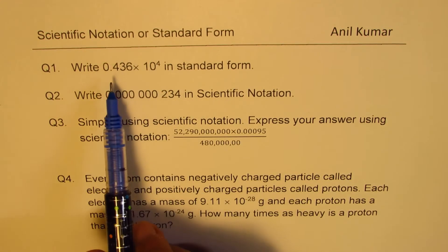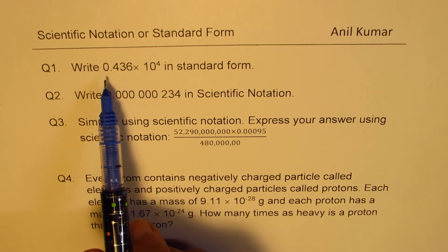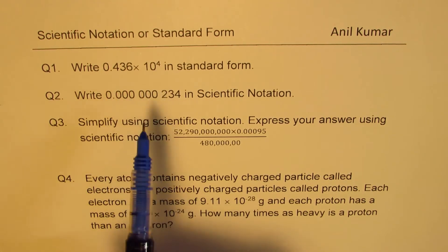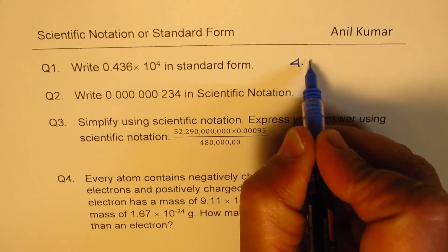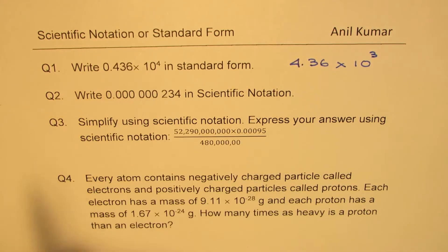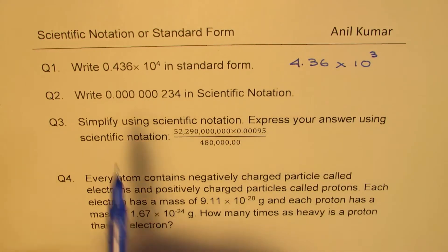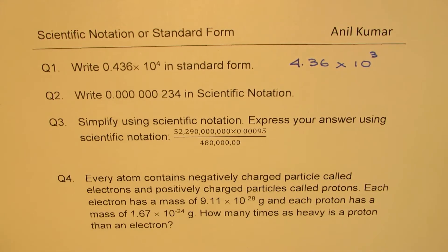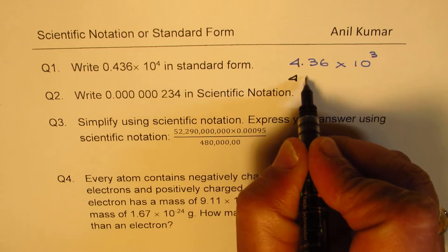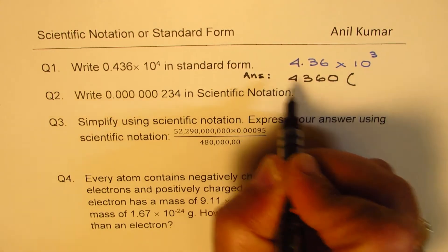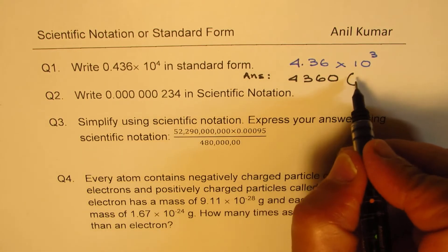Scientific notation requires writing a number with a digit from 1 up to 9 in the one's place. So 0.436 × 10⁴ can be written as 4.36 × 10³ in scientific notation. In standard form, we multiply by 10⁴, and the answer we get is 4360. So 4360 is the number in standard form.